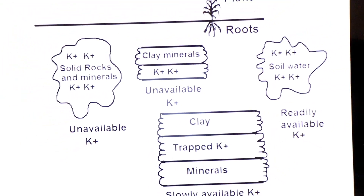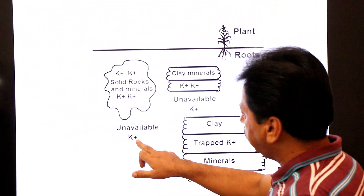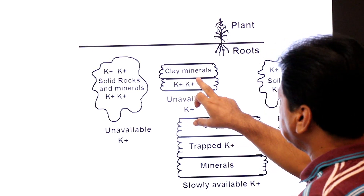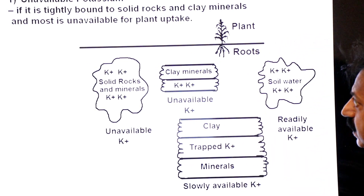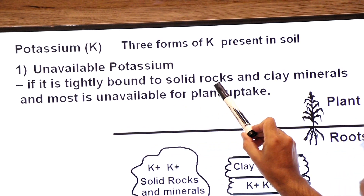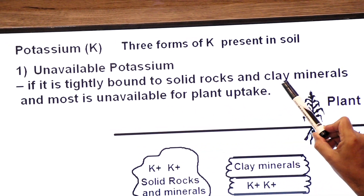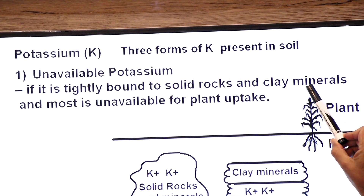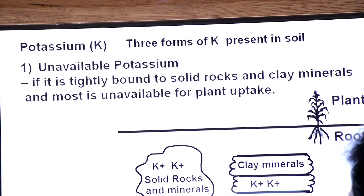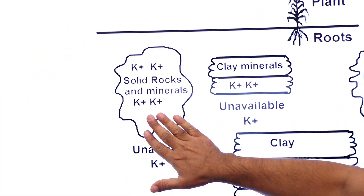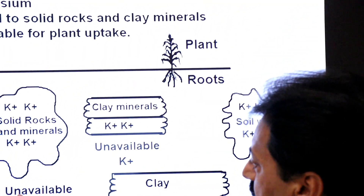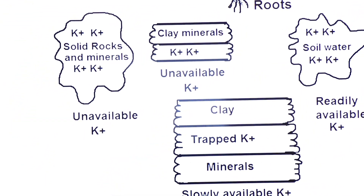Dear students, first we will study unavailable potassium. Some potassium ions are found in solid rocks or clay soil in insoluble form. It is tightly bound to solid rocks and clay minerals. Clay soil is what you call chikni mitti — clay soil and clay minerals — and it is most unavailable for plant uptake. These mineral ions tightly bound in solid rocks or clay minerals do not reach the roots. This is called unavailable potassium.